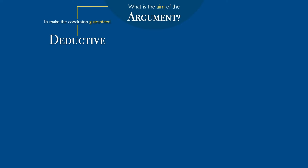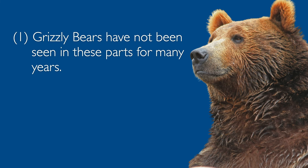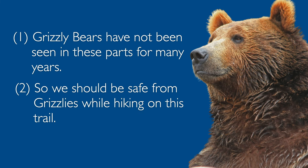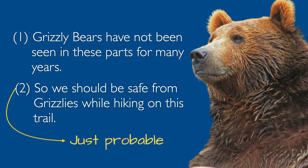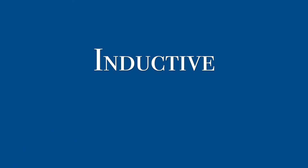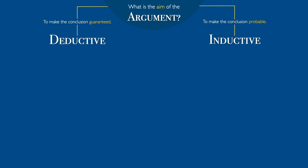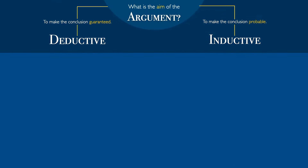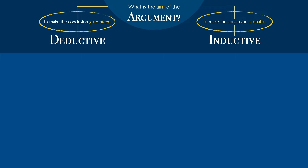But some arguments only aim to make the conclusion probable. These are inductive arguments. For example: grizzly bears have not been seen in these parts for many years, so we should be safe from grizzlies while hiking on this trail. This is pretty good reasoning, but the conclusion is not a sure thing — and that's okay. It's an inductive argument, so its goal is a probable conclusion. So here at the first level of our chart, the difference between deductive and inductive reasoning is all about the aim of the reasoning — what the argument is trying to do.